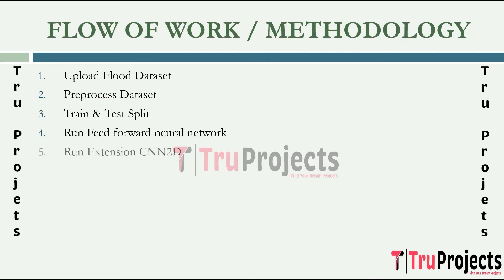The next step is running the extension model, which is CNN 2D. Here we train a CNN 2D model, which involves similar steps as training the feed forward neural network but with specialized convolutional layers designed to capture spatial patterns in the data.